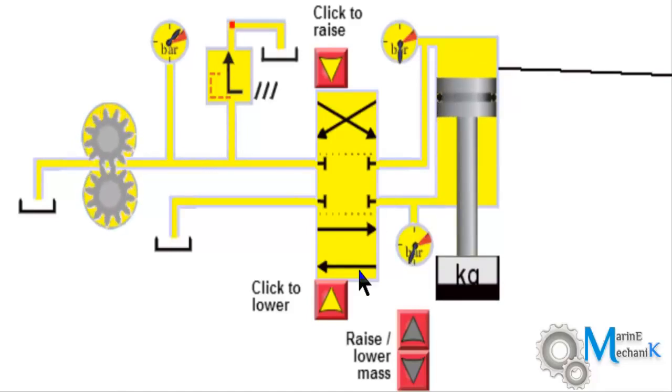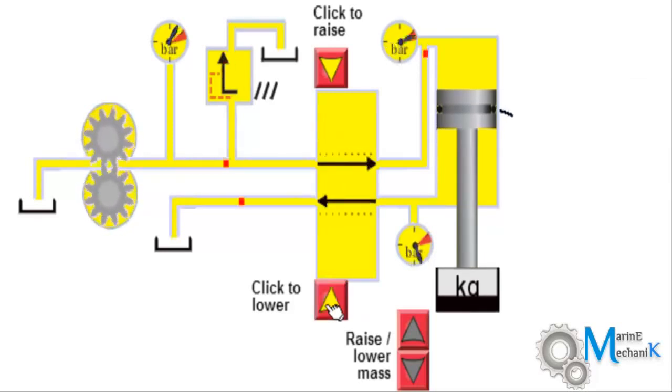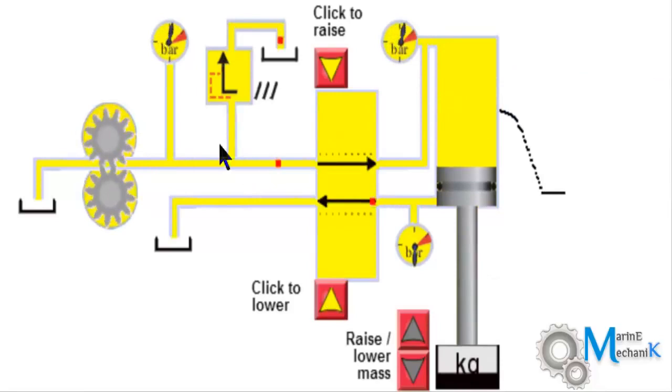Now I want to lower the piston so what I am going to do is click on this. As I do that, the oil flows directly on top of the piston which is indicated by the pressure here, pushes the piston down the weight goes down and the oil which was underneath the piston drains back to the tank. Now on top of the piston is full of oil and the piston can no more go down. Thus the pressure relief valve or the safety valve lifts and drains back to the tank.